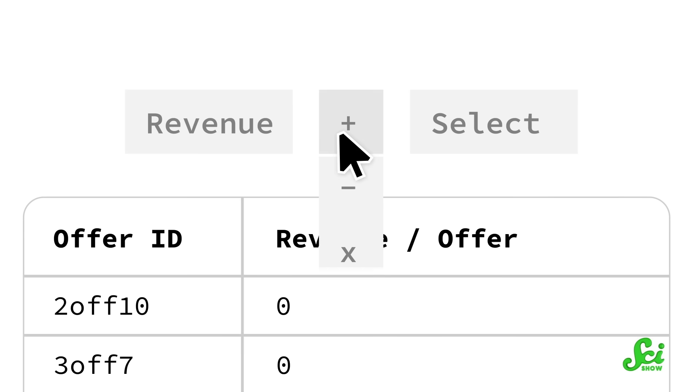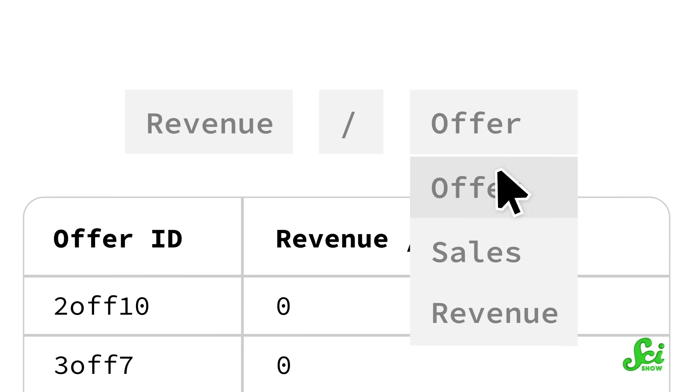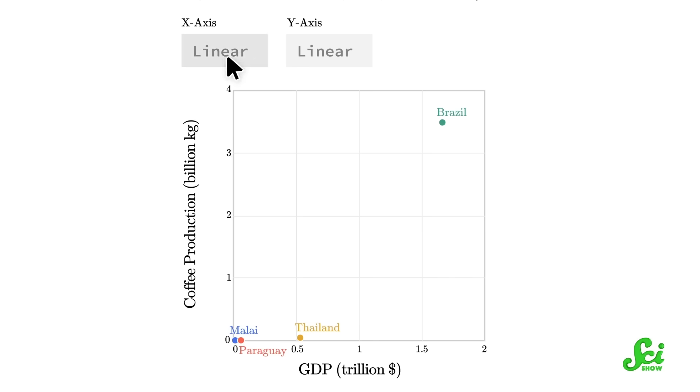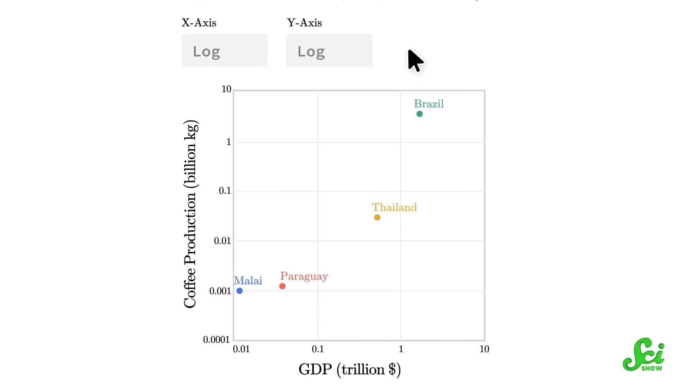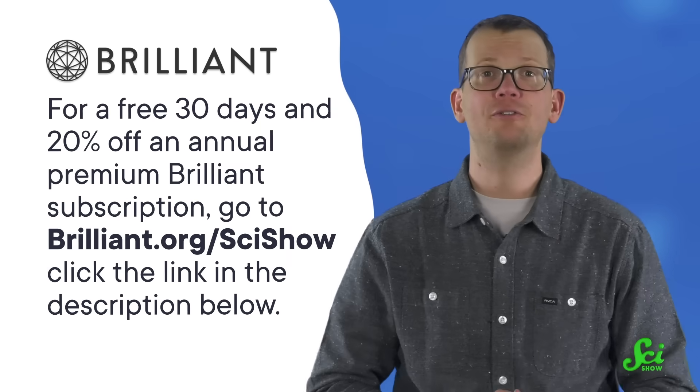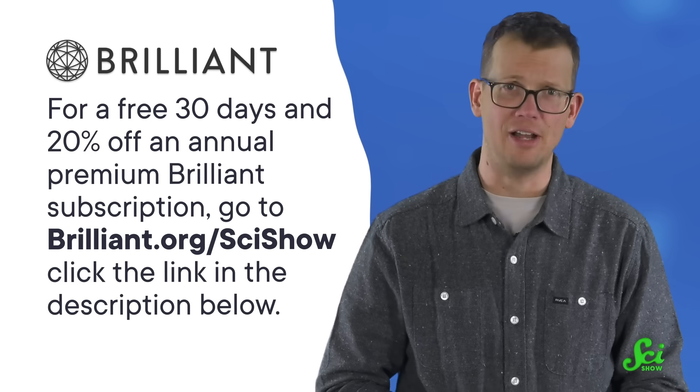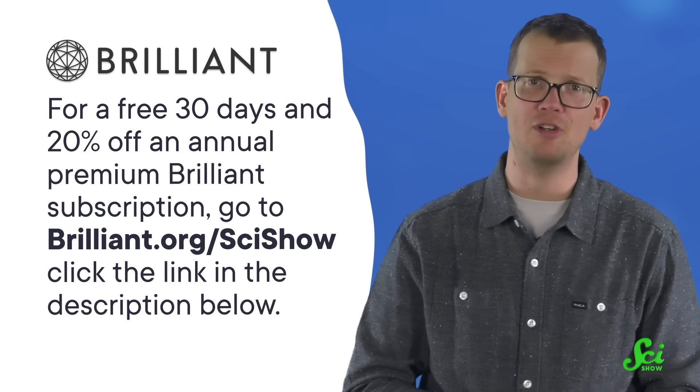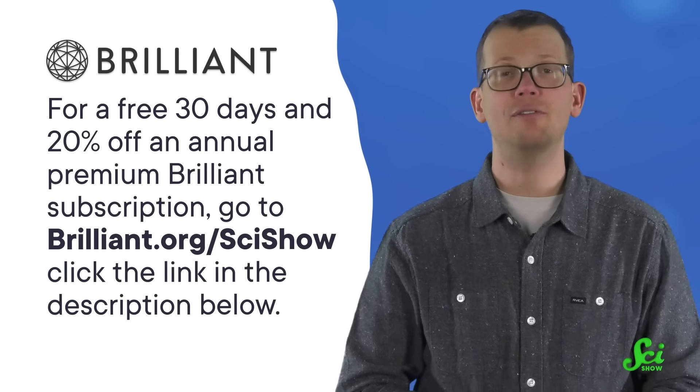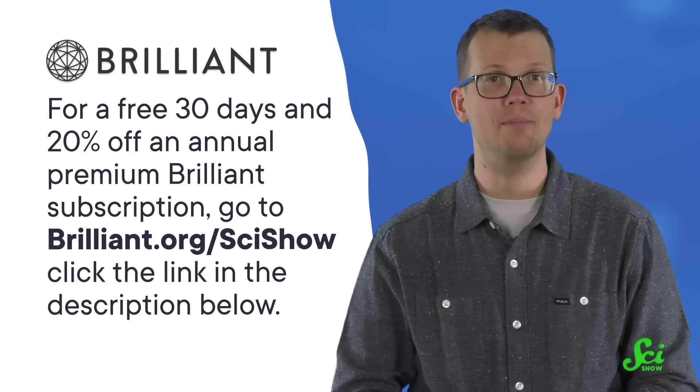So they partner with math and science educators and lifelong learners from MIT, Caltech, Duke, the University of Chicago, and more, to create thousands of interactive lessons for you. You can try them all for free for 30 days at brilliant.org/scishow, or by clicking the link in the description down below. That link also gives you 20% off an annual Premium Brilliant subscription.